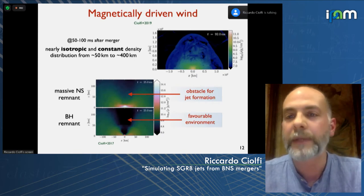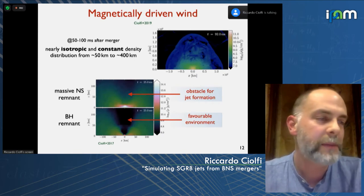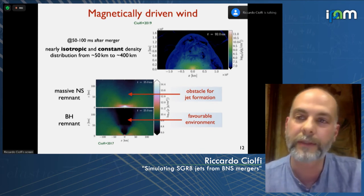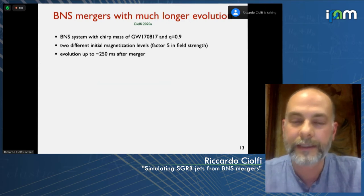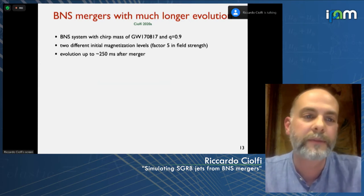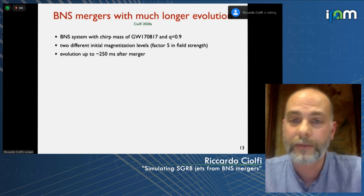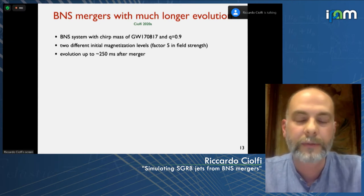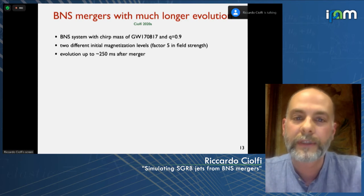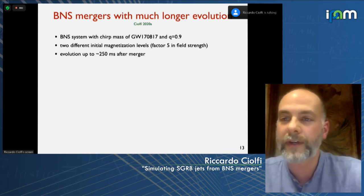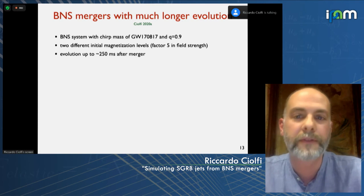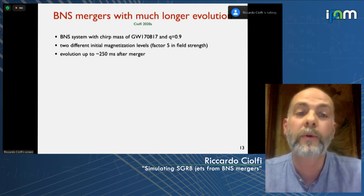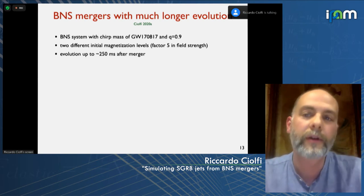Up to 100 milliseconds after merger in our 2019 paper, we didn't see any sign of jet formation, making us quite pessimistic about this possibility. This brings us to the latest paper from last year, where we performed two magnetized binary star merger simulations with a similar setup, consistent with GW170817, having two different magnetization levels with maximum field strength of 1×10^15 and 1×10^16 Gauss. Most importantly, we evolved these to more than 250 milliseconds after merger — a much longer post-merger simulation requiring quite an effort, but which paid off because something new emerged.